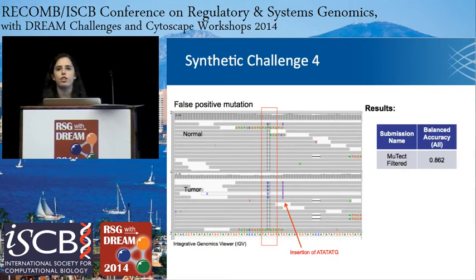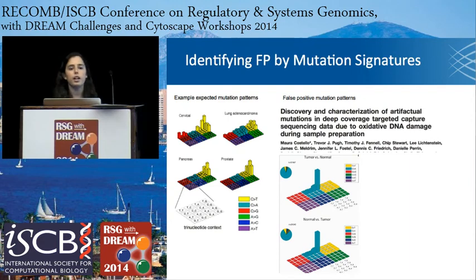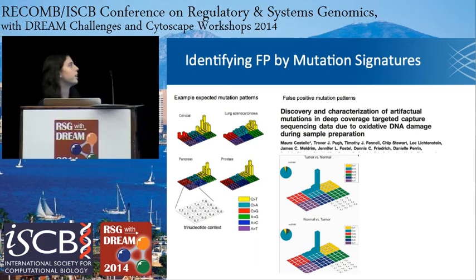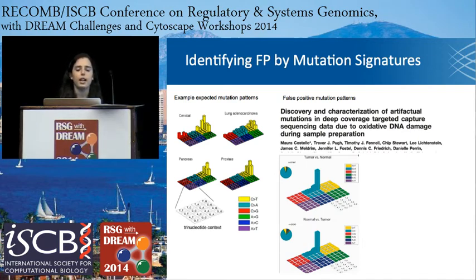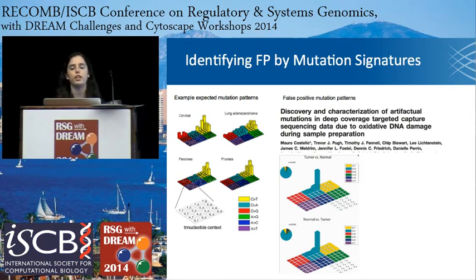Another way to identify false positives — which we utilized in this synthetic data and other datasets — is to look at mutational patterns. There are a number of recently published papers, including one from Mike Lawrence, that look at mutation signatures across various cancer types. In these Lego plots, each different tumor type has a unique signature: cervical cancer has an APOBEC signature seen in the back row, and lung adenocarcinoma has a smoking signature with many C-to-A mutations. Having an understanding of what mutation pattern you'd expect in your tumor type gives you some idea of whether you're seeing false positives or rare true mutations.